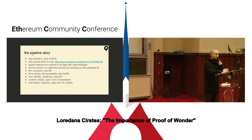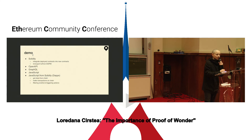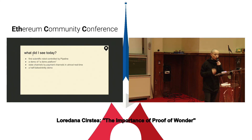The idea started in June and we had our first prototype in July. Since then we've had multiple refactorings, especially as we are now following the specifications from ETH PM. We also did our own graphical library. Now you can have Solidity, JavaScript, and OpenAPI, and control robots on layer 1 with Solidity and layer 2 with off-chain transactions and other HTTP requests. So I did the demo — what did we see today? The first scientific robot controlled by Pipeline. A demo of a demo platform.